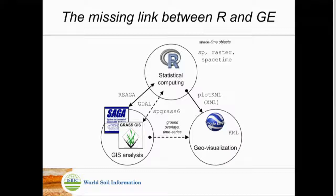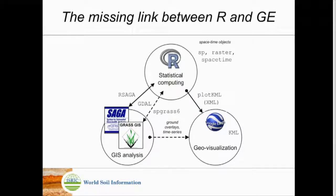About three years ago I was looking at this triangle — I'm a big fan of Google Earth, a big fan of open-source GIS, and of course R — and I said there's one thing not well established in this triangle: going from R to Google Earth. I felt there was big potential, so I started thinking maybe I could make a package. I started making some functions.